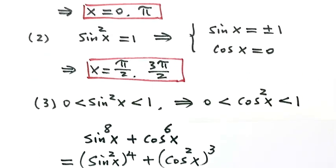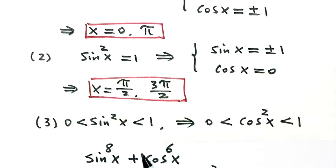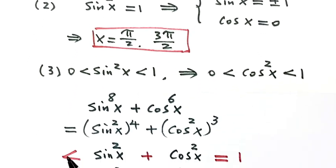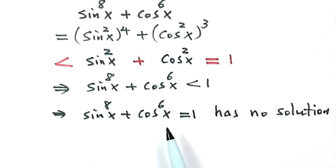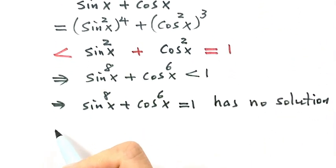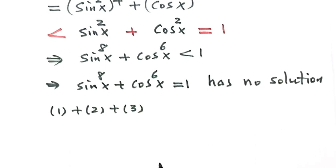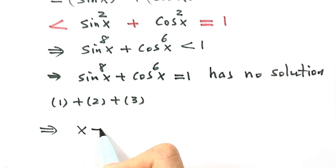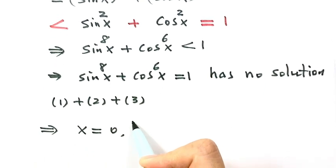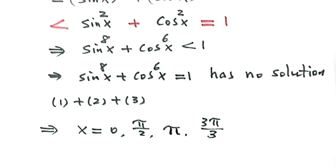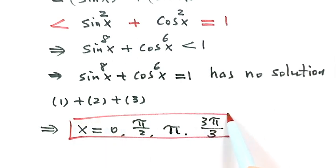Combining the three cases: two solutions from the first case, two from the second case, and no solutions from the third case. The solutions of the equation are x equals 0, pi over 2, pi, and 3 pi over 2. Those are the four solutions, and that completes the first method.